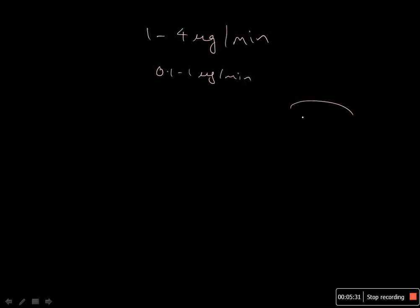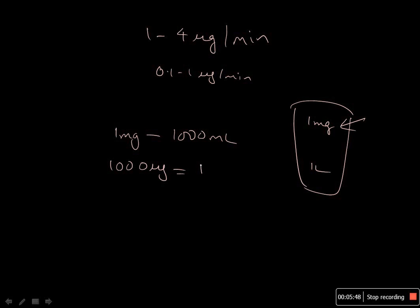Now the easy way to set up a drip is take 1 liter of normal saline and put 1 mg of adrenaline. So you have 1 mg of adrenaline in 1000 ml, or you can write this as 1000 micrograms in 1000 ml, or 1 microgram in 1 ml.